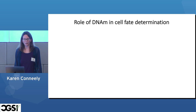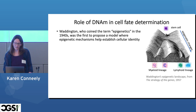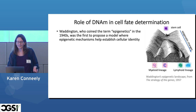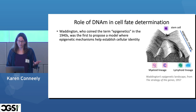Another role of DNA methylation is in cell fate determination. Waddington, who developed the idea of epigenetics back in the 1940s, was also the first to propose this model where epigenetic mechanisms help establish cellular identity. The idea is that we start with a stem cell, and as the marble rolls down the slope, epigenetic changes may occur — determining whether it becomes a lymphoid or myeloid lineage cell, and ultimately a neutrophil or monocyte. Once you reach the bottom, you're stuck — that's the cell you are. We know that's not really true anymore with induced pluripotent stem cells, but this wasn't available in the 1940s.